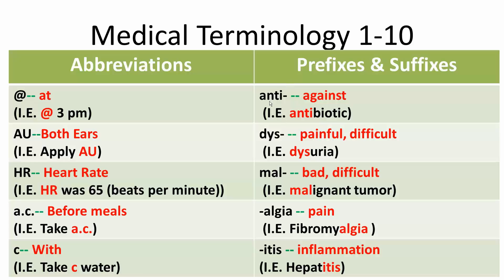Now for the prefixes and suffixes. The prefix 'anti' means against — for example, antibiotic. The prefix 'dys' means painful or difficult — for example, dysuria, meaning pain when urinating.